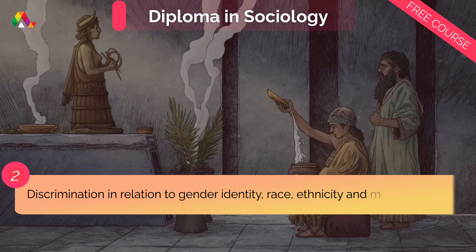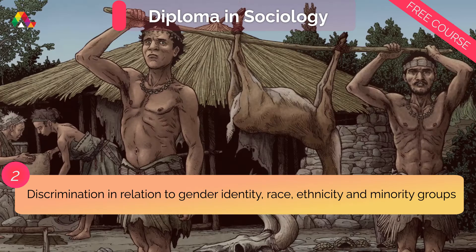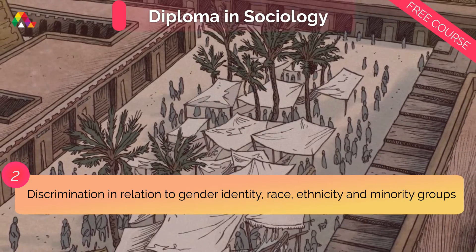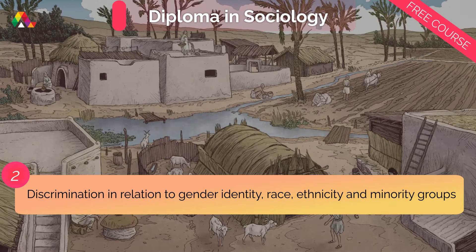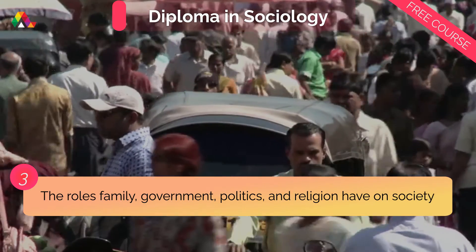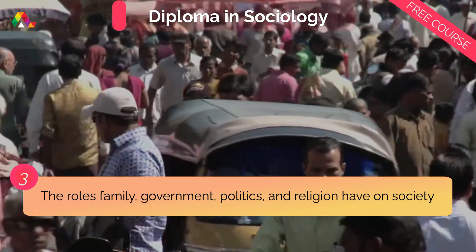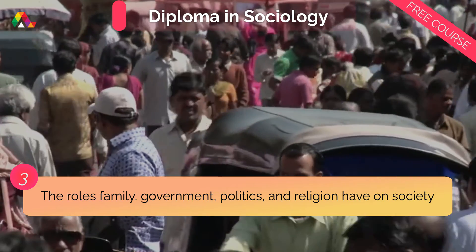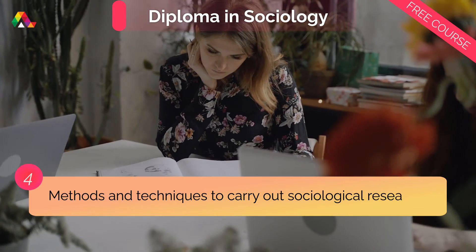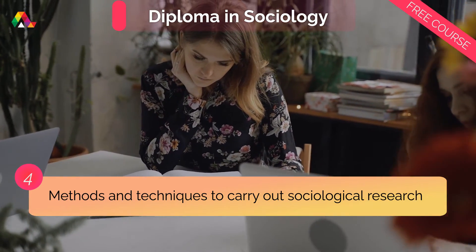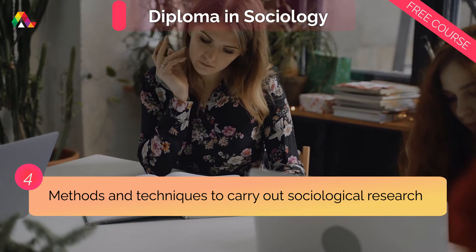The course covers gender identity, race, ethnicity, and minority groups, and how they relate to discrimination such as educational inequality, the roles family, government, politics, and religion have on society, and the main research methods and techniques to carry out sociological research.